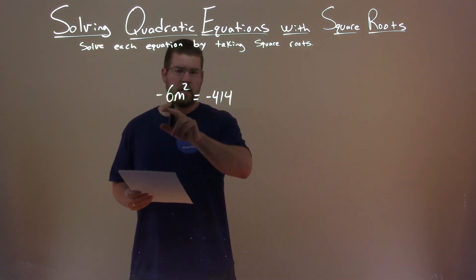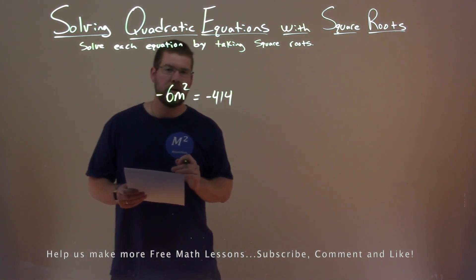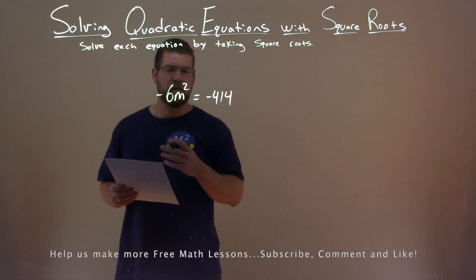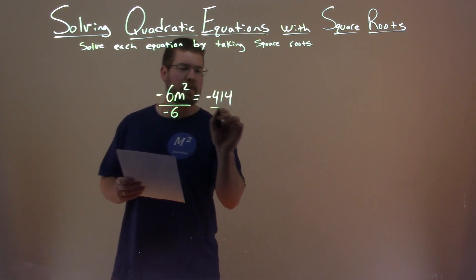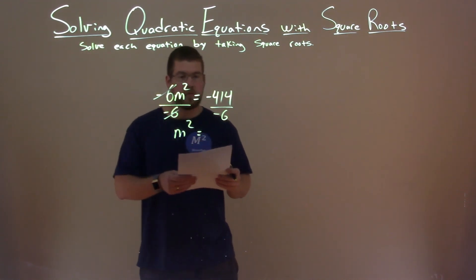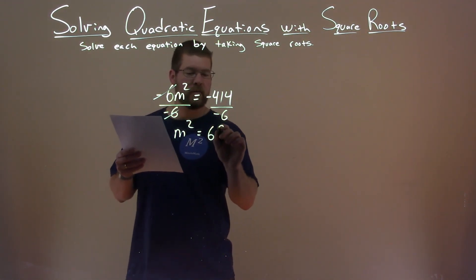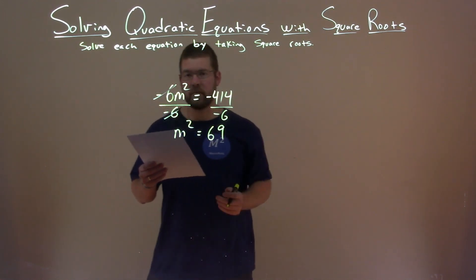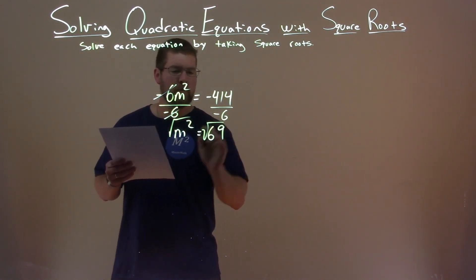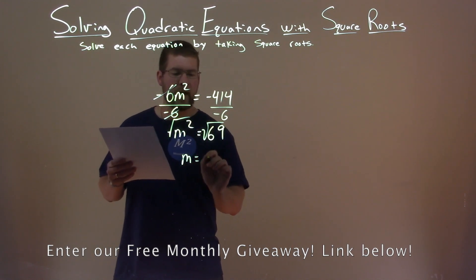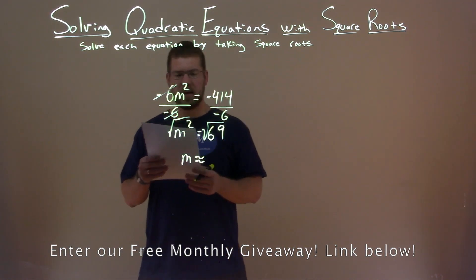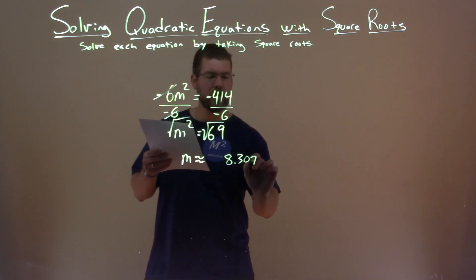We're given our problem here: negative 6m squared equals negative 414, and we want to solve this by taking the square root. First, I need to get m squared by itself — it's being multiplied by negative 6. So if I divide both sides by negative 6, the negative 6 cancels and we have m squared by itself. Negative 414 divided by negative 6 is positive 69, since negative divided by negative is positive. So now we have m squared equals 69.